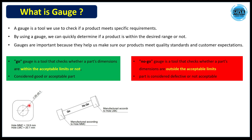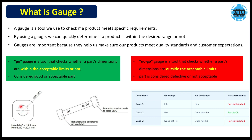To measure a hole, we insert the gauge into it. If the go side fits completely but the no-go side also fits completely, we must reject the part — that is the worst condition. We only want the go side to fit. If both go and no-go sides fit, the part is rejected. The go side should go in, and the no-go side should not go in.